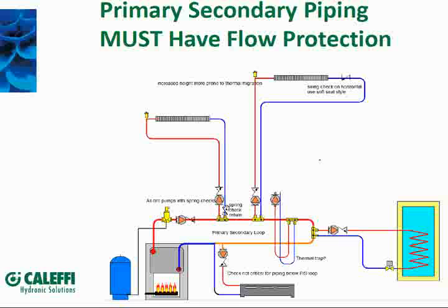So we put a check valve or flow check on the return side also, giving 100% shutoff on both sides. You could put a zone valve in there, but then you'd have to power it. There are different types of check valves — swing checks, spring checks, soft seat checks — and I'll show you the best way to use them.